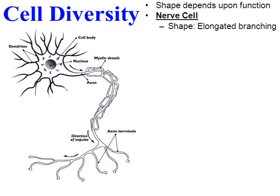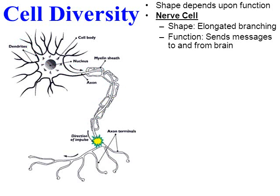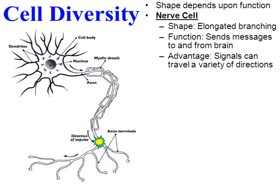Here's a great example of how not all animal cells are round — here's a nerve cell. You can see it's not round; it has branches coming out in various directions, and the body is very stringy and elongated. This helps it do its function: sending electrical messages to and from the brain. The advantage of this shape is that those signals can travel a variety of directions. If somebody has nerve damage and some branches are damaged but others remain intact, there's a good chance they can still send messages to and from the brain without severe disabilities.